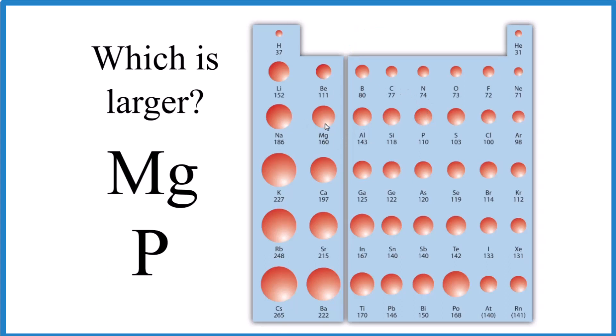So we find magnesium, which is right here, and then we find phosphorus right over here. And so what we want to do is look at the trend for atomic radii on the periodic table to figure out whether magnesium or phosphorus is bigger.